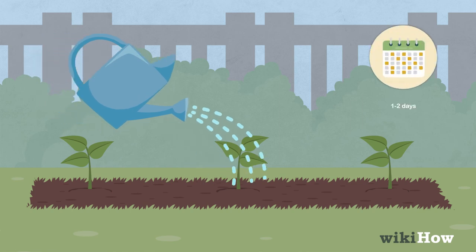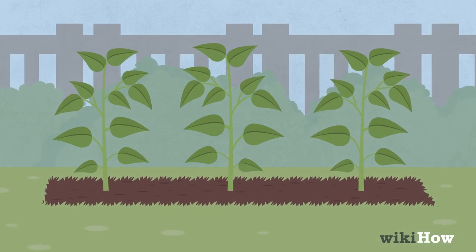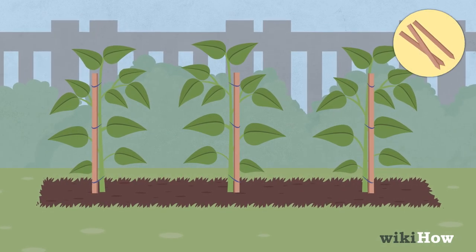Water your plants every 1-2 days, and cover them when it gets cold out. Once they get tall enough to start growing peppers, support the plants by gently tying them to stakes.